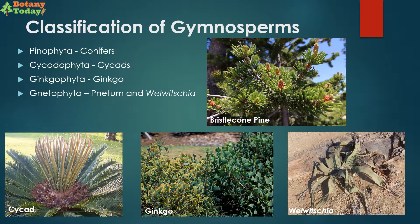Gymnosperm is further divided into four major divisions: Pinophyta, that include conifers; Cycadophyta, that include cycads; Ginkgophyta, that include ginkgo; and Gnetophyta, that include gnetum.